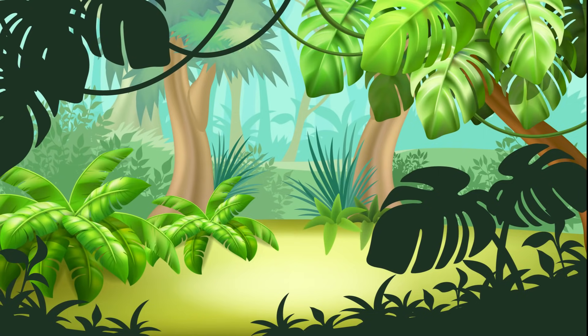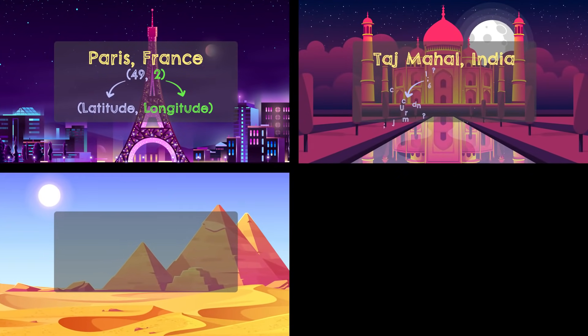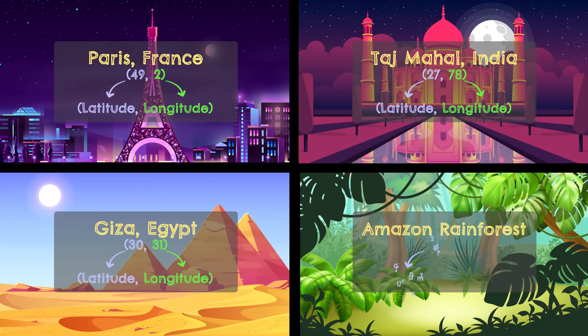So as you can see, each place on earth has its own unique set of coordinates made up of a latitude and longitude. And if you know a place's coordinates, you can find it on a map. And now you know all about latitudes, longitudes, and coordinates. Thanks for watching.